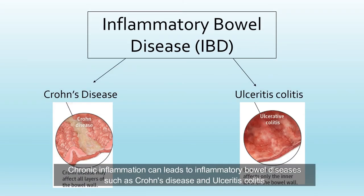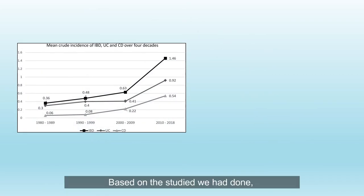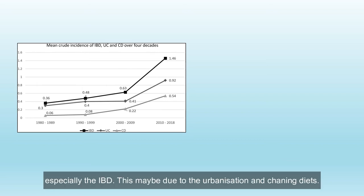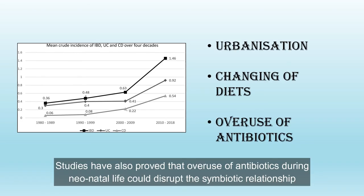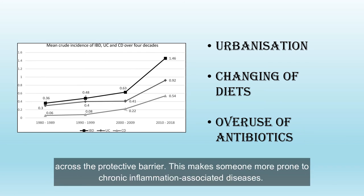Chronic inflammation can lead to inflammatory bowel diseases such as Crohn's disease and ulcerative colitis. Based on studies, the trend of chronic inflammation-associated gut disease is rising over the last decade, especially IBD. This may be due to urbanization and changing diet. Studies have also shown that overuse of antibiotics during neonatal life could disrupt the symbiotic relationship in the lumen permanently. This disruption can lead to gut leakage, causing easier access of pathogenic materials across the protective barrier.